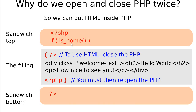For the conditional tag, you have to open PHP to run the conditional tag, but then close it temporarily because you're going to use HTML — you can't put HTML inside PHP. So you open PHP, run the conditional code, close PHP temporarily so you can use the HTML, then reopen PHP and close the whole bundle. It's like a sandwich with your HTML in the middle. That's why we have to do all that — you simply can't put HTML inside PHP.